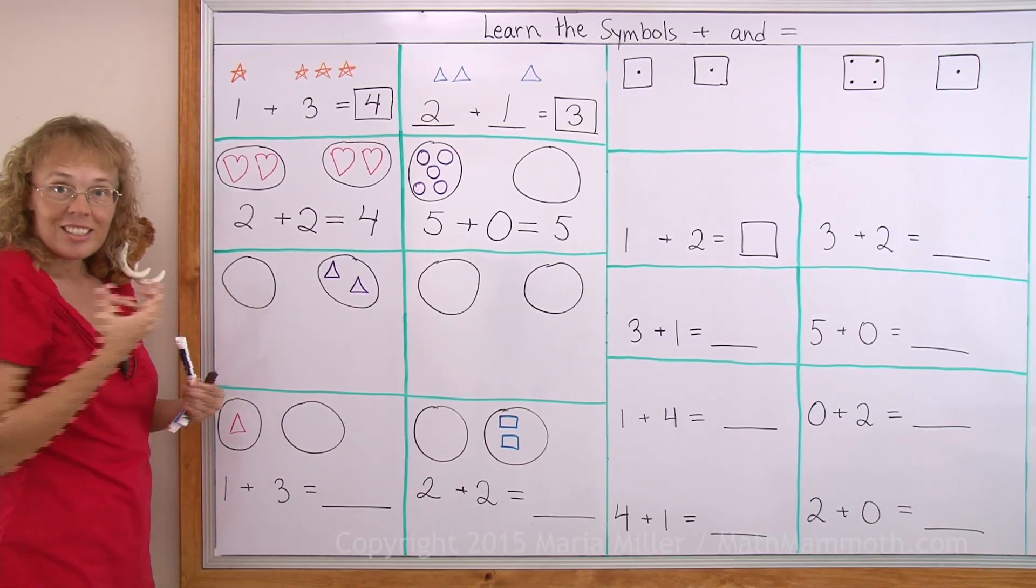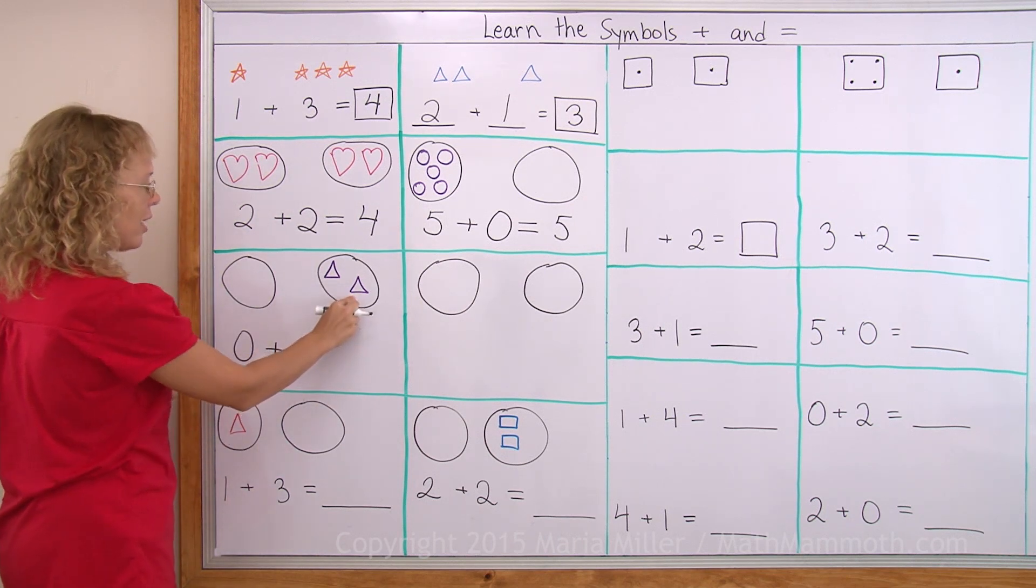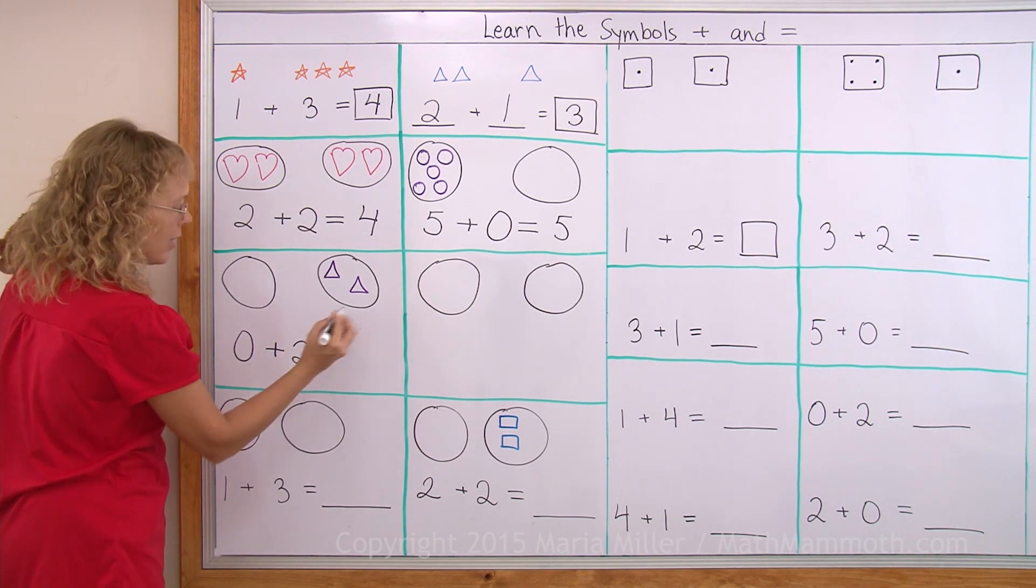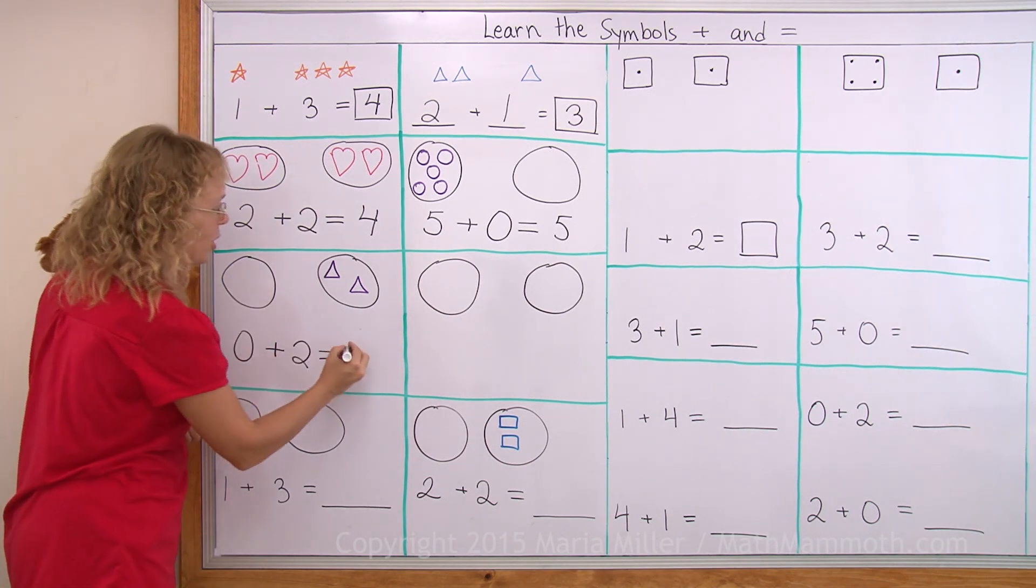Over here zero again. Zero and then plus. Then how many here are? Two. Then equals and how many in total? Can you see? Just two in total.